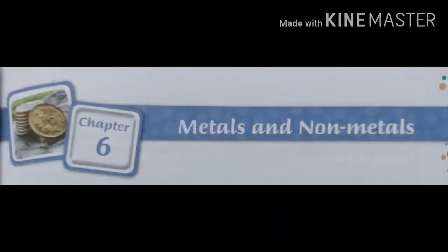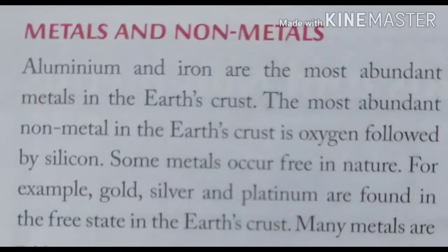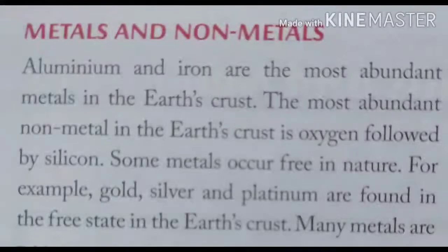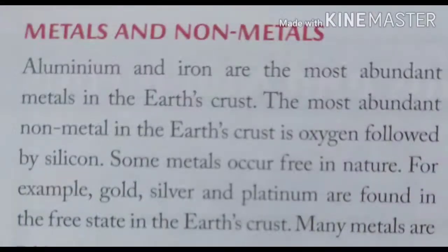We know that aluminium and iron are the most abundant metals in the earth's crust. The most abundant non-metal in the earth's crust is oxygen, followed by silicon.